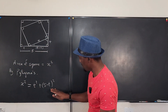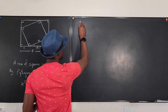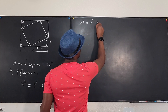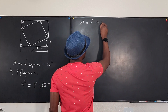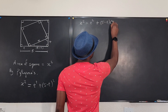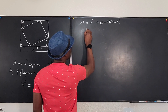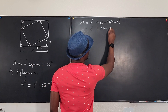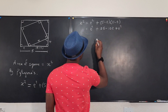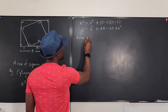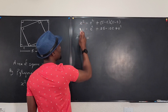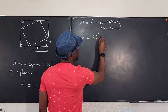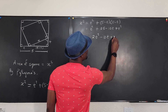Let's simplify by expanding: x squared equals t squared plus the expansion of (five minus t) squared, which is 25 minus 10t plus t squared. So the area equals x squared equals 2t squared minus 10t plus 25.